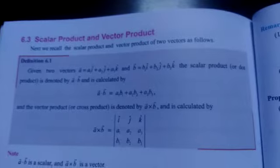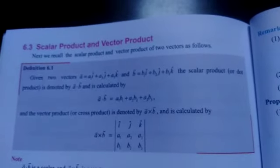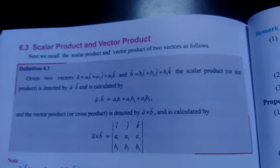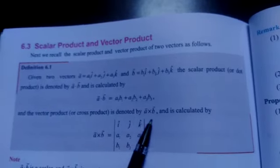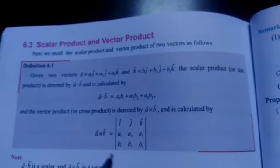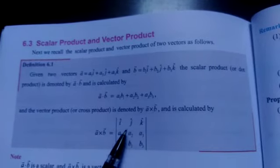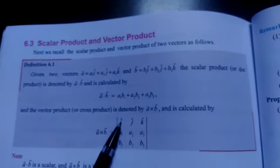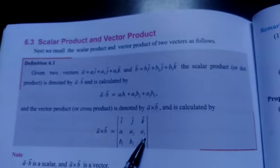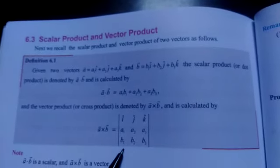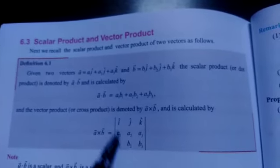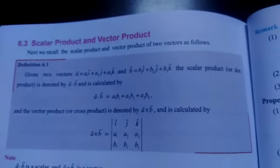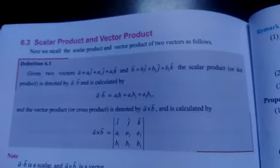Vector product, another name is cross product, is denoted by a×b. It is calculated using the determinant with î, ĵ, k̂ in the first row, a1, a2, a3 in the second row, and b1, b2, b3 in the third row. If you expand, you get the value of a×b. That is the cross product.